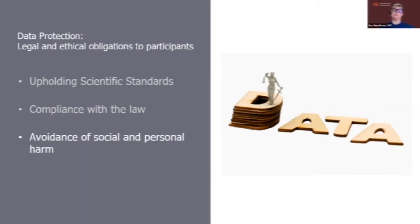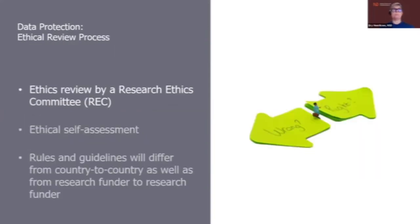You also have to avoid social and personal harm, meaning you must be aware of whether the data you are collecting could harm your participants. For instance, if you are collecting sensitive data and your participants live in a society where that data could be dangerous for them, you have to protect that data in a special way. There is also the ethical review process — ethical reviews may be done by ethics committees, and regulations differ between countries.